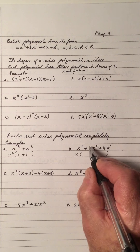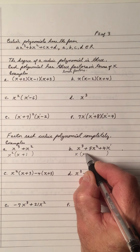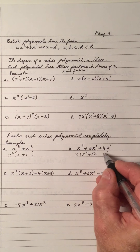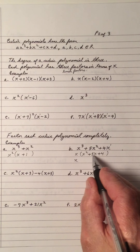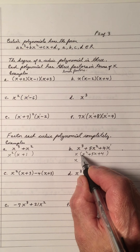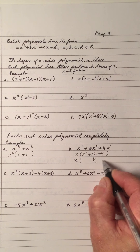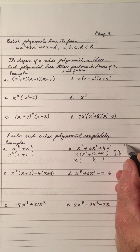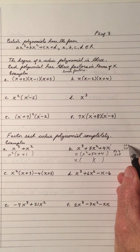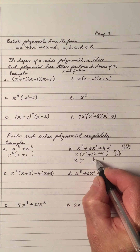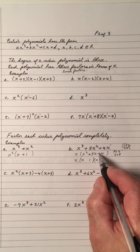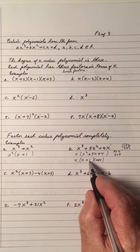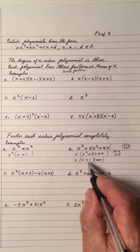x is the GCF and the smallest exponent is 1. So x cubed divided by x is x squared. 5x squared divided by x is plus 5x. And 4x divided by x is plus 4. Notice now we have a trinomial and the a term is 1, so this is easy to factor because the product is 4 and the sum is 5. Factors of 4 are 1 and 4, and 2 and 2. The pair that gives you a 5 is 4 and 1. Since the product is positive, you must have two plus signs: plus 1, plus 4.